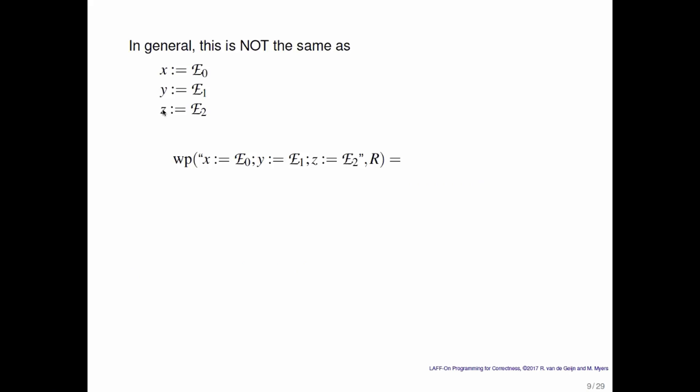In general, this is not the same as assigning e0 to x and then assigning e1 to y and then assigning e2 to z. Now why is that? Well, look at the weakest precondition of that.